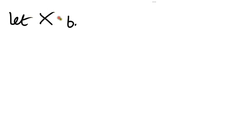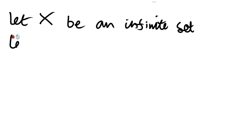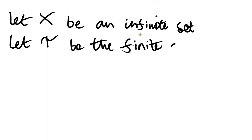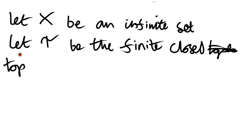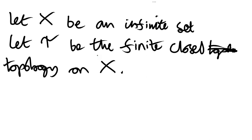Now we're going to think about a more interesting kind of topology. Let X be some infinite set and let tau be the finite closed topology on X. The finite closed topology is such that the closed sets of the topology are precisely the finite subsets of X. A set is closed if and only if it's a finite subset of X or if it's equal to X itself.